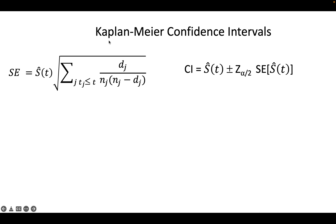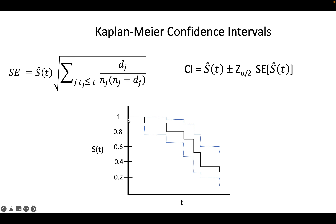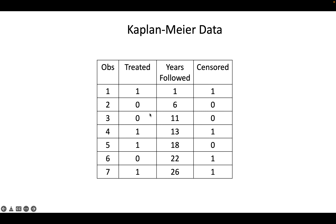Confidence intervals can be calculated for Kaplan-Meier curves — that's something software would do — and you can see a confidence band around the Kaplan-Meier function. This is what Kaplan-Meier data looks like when you input it into SAS: you have people's treatment status (treated or not treated), the number of years they were followed, and why they stopped being followed. A value of 1 means they were censored; a value of 0 means they had the event.